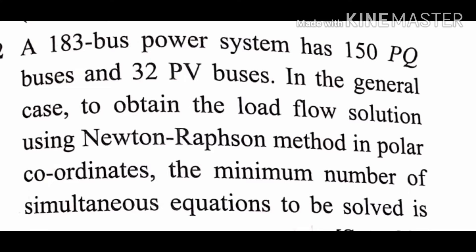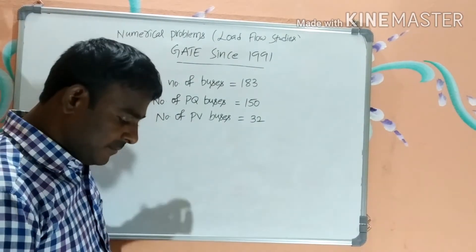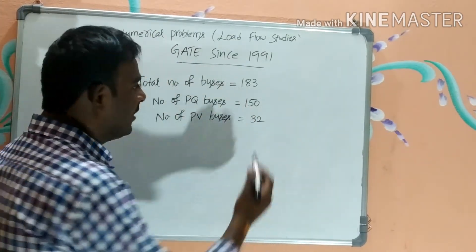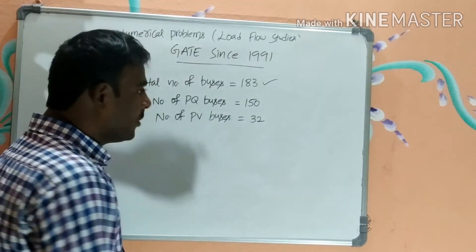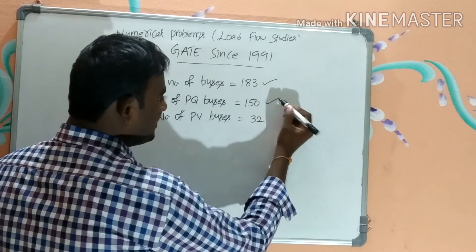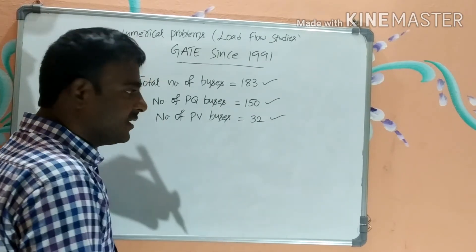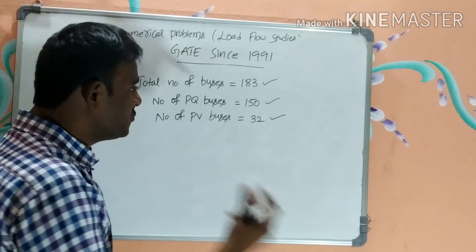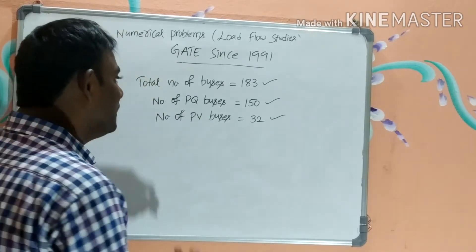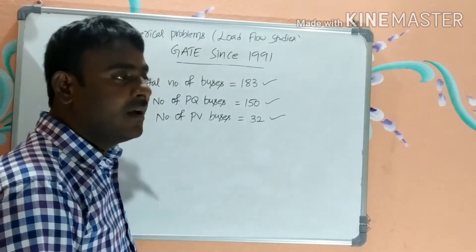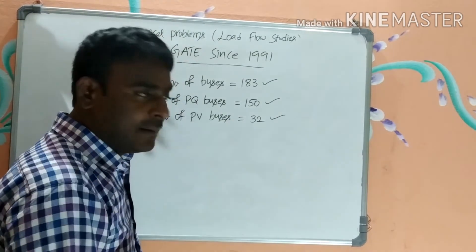This is the same method used to find the Jacobian matrix order. Total number of buses is 183. Since one bus is the slack bus, we have only 182 buses remaining for writing Newton-Raphson equations. Whether they ask the number of equations or the order of the Jacobian matrix, both are the same.